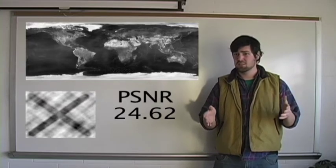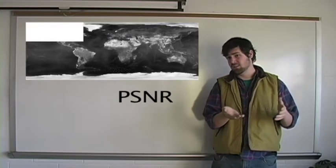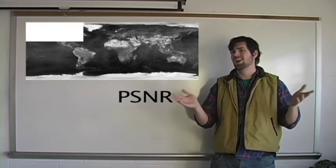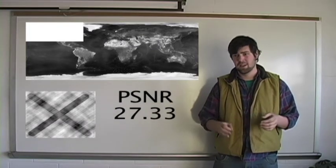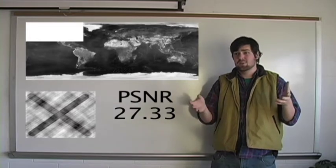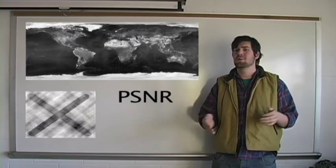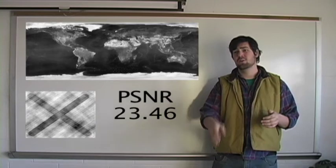If for some reason he feels he wants to crop off a part of the image, our X is still there, PSNR of 27.33. If for some reason he wants to add some noise, we still see the X, PSNR of 23.46.